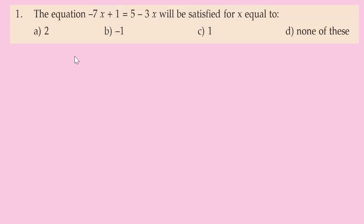Question number 1: the equation minus 7x plus 1 is equal to 5 minus 3x will be satisfied for x equal to — we have 4 options: 2, minus 1, 1, and none of these.